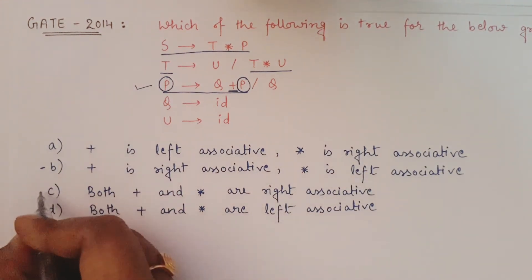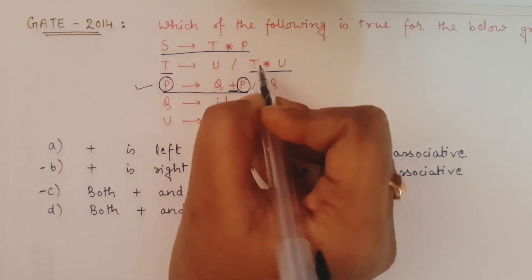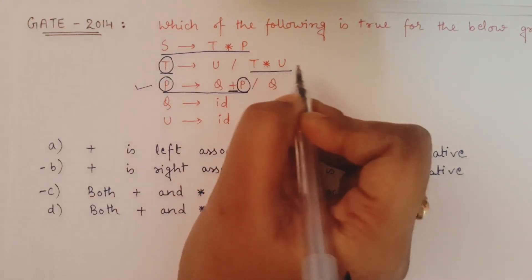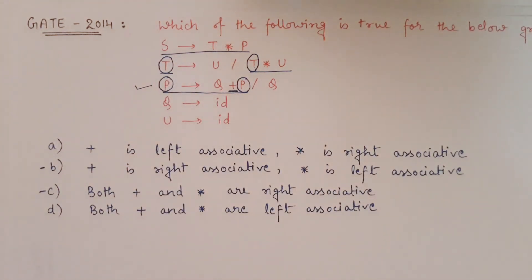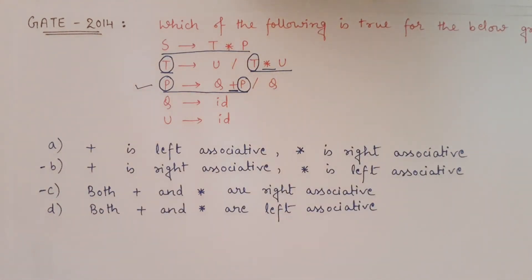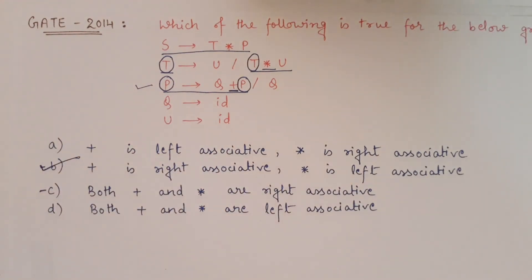So plus is right associative — that means either option B or option C can be true. Now let's determine star. Looking at T gives T star U: T is the LHS, and in the right-hand side T is present in the leftmost position. That means T gives T star U is a left recursive grammar, and therefore star is left associative. So the correct answer is option B: plus is right associative and star is left associative. In this way, you can easily determine whether operators are left or right associative.